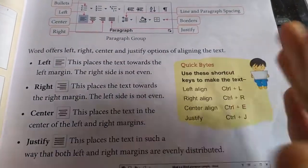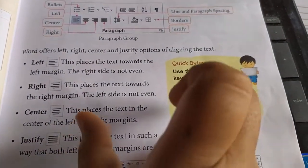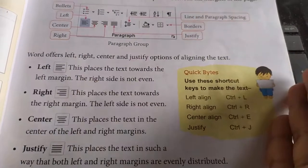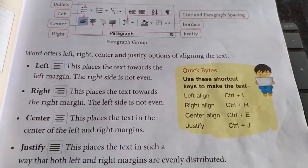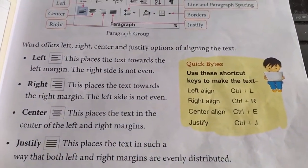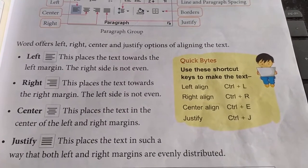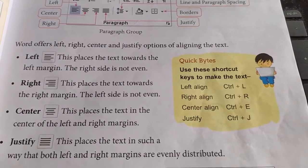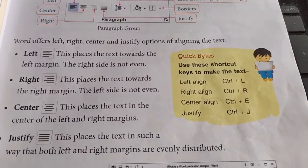Right means the text will be aligned in the right margin. Center means in the center of the page the text will be aligned. From the left and right margin it will take the center. Justify means this place, the text in such a way that both left and right margin are eventually distributed.